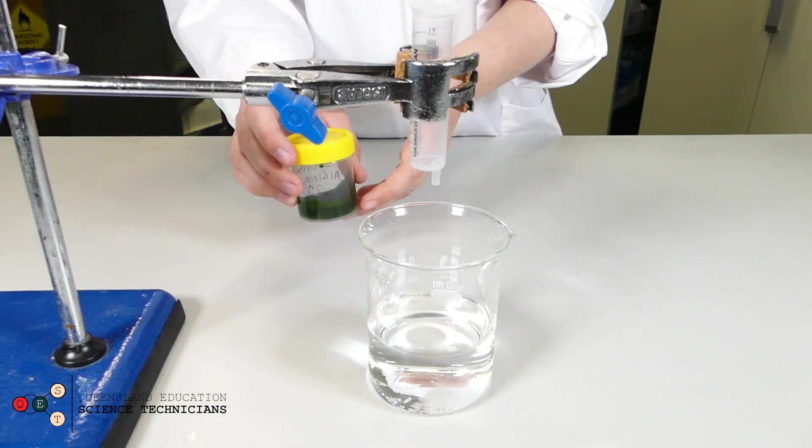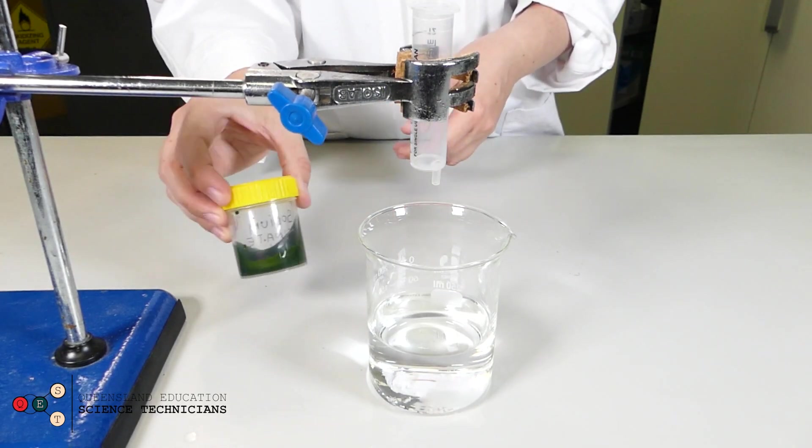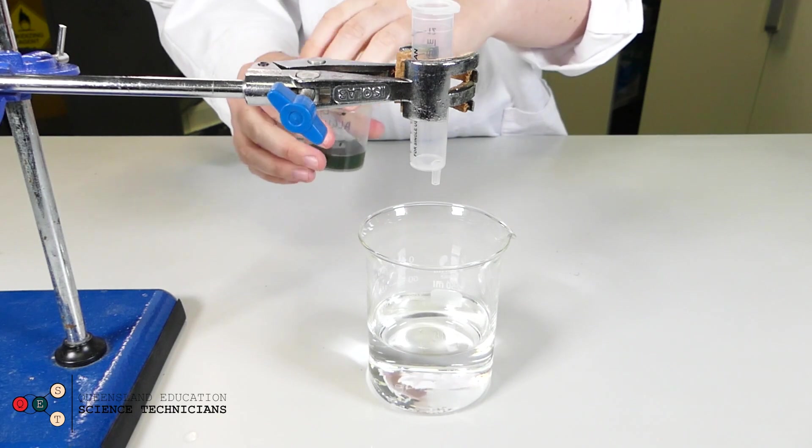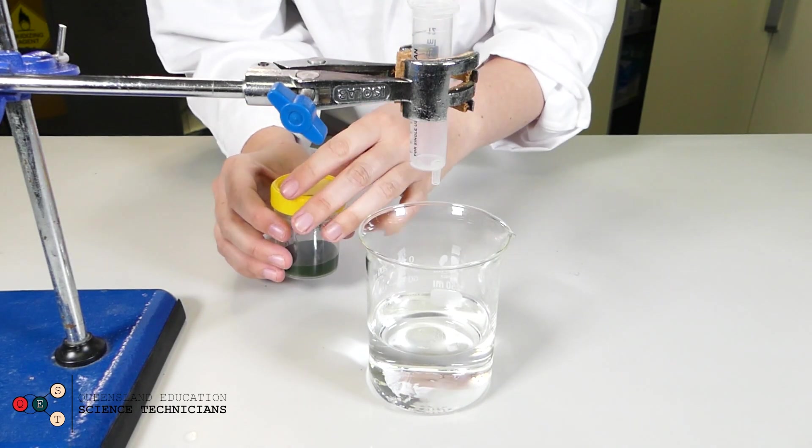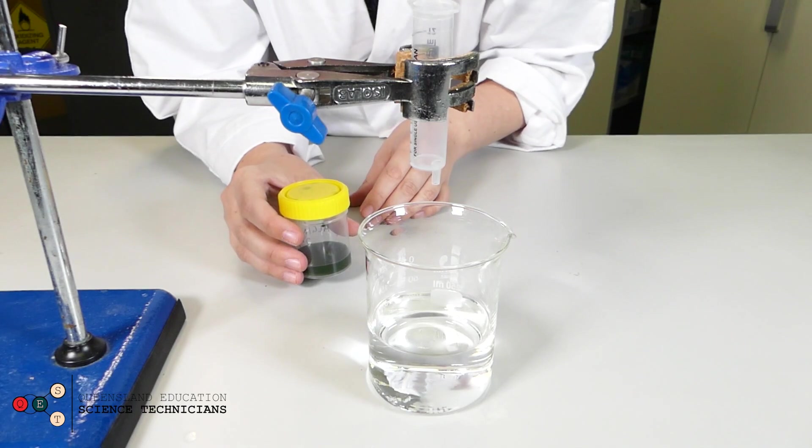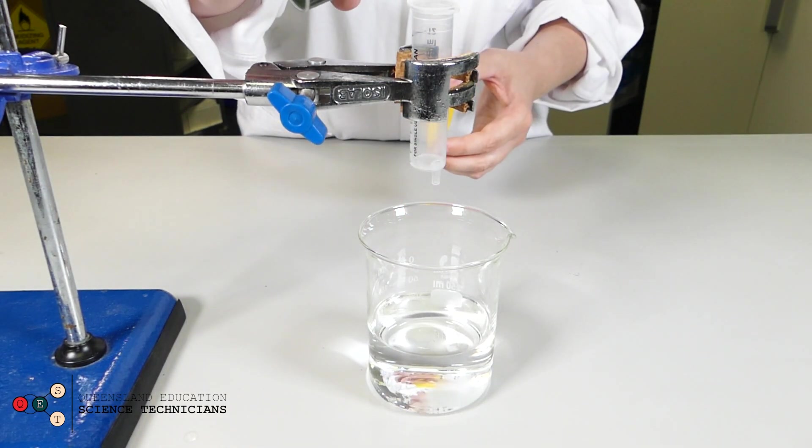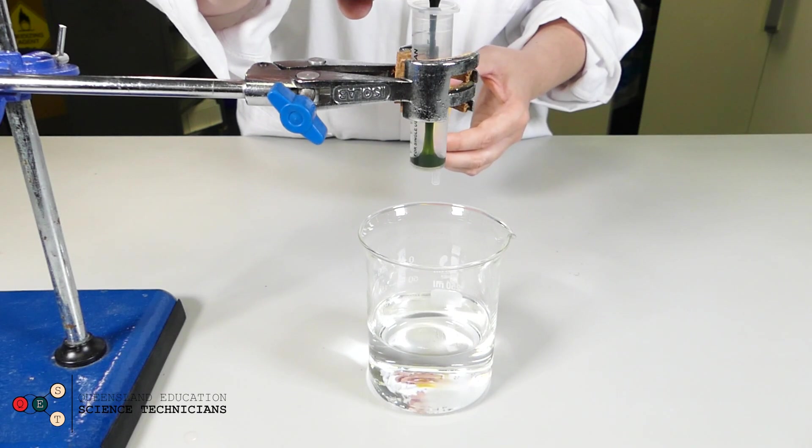Now I've set up an open syringe above a 250 mil beaker of calcium chloride. I'm going to let our sodium alginate and algae solution just drip down out of the syringe into the calcium chloride solution. It's a 2% solution of calcium chloride.